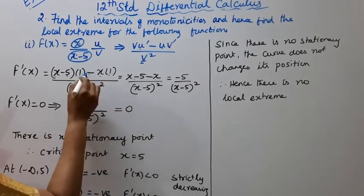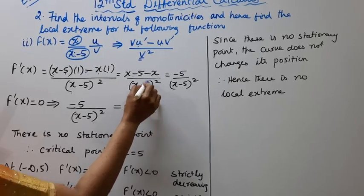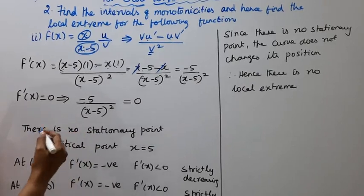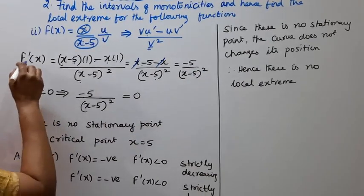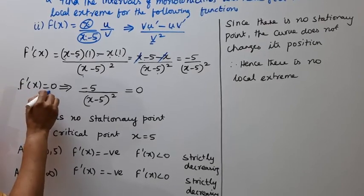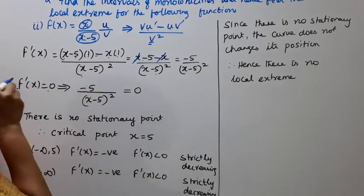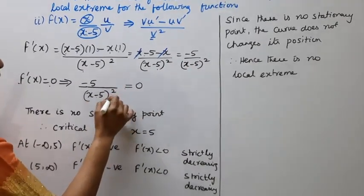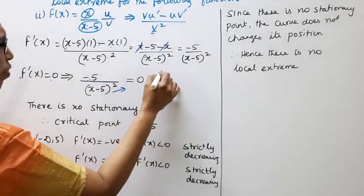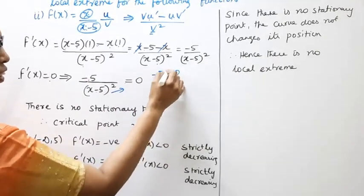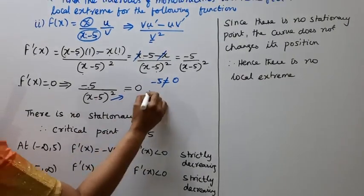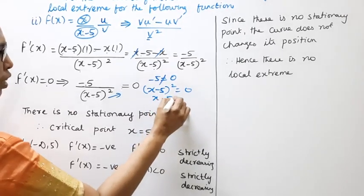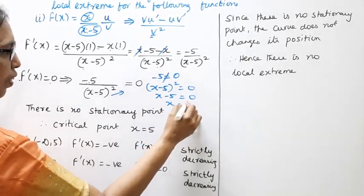Simplifying the numerator: x minus 5 minus x. The x terms cancel, leaving minus 5. Therefore f dash of x equals minus 5 divided by x minus 5 whole squared. Setting f dash of x equal to zero: minus 5 by x minus 5 squared equals zero.